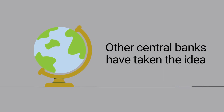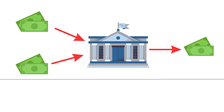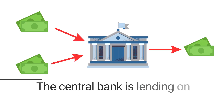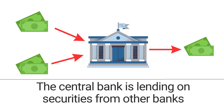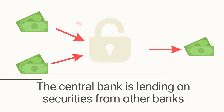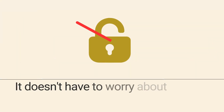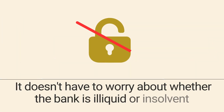Other central banks have taken the idea up. Notice the central bank is simply lending on securities brought to it by other banks. It is not lending the money unsecured, and thus it does not have to worry about whether the bank is illiquid — short of liquidity — or insolvent — short of capital.